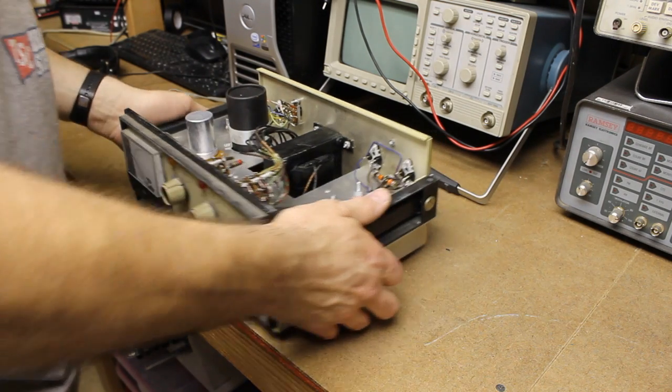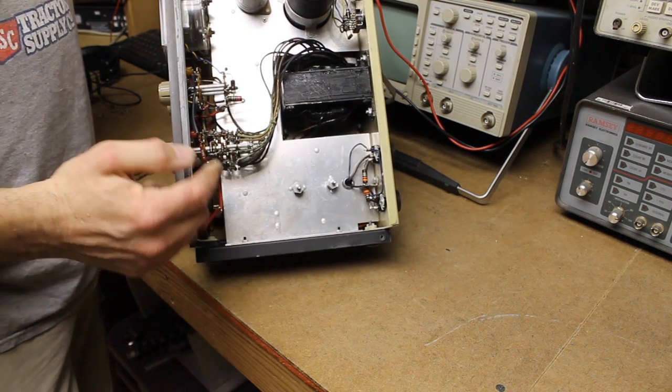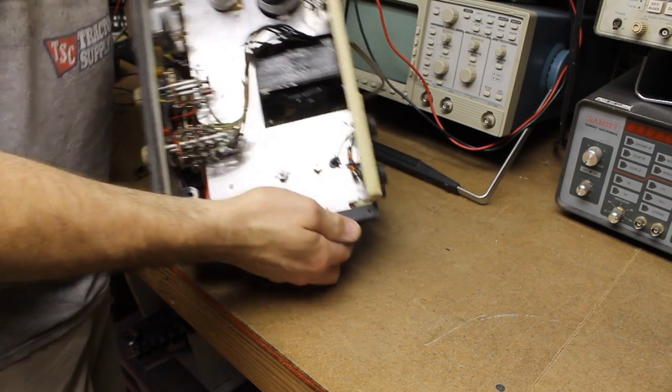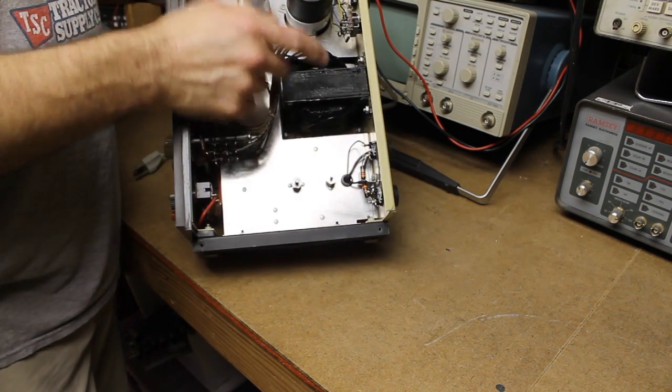Inside on the top, we have our wafer switches, meter movement, pass transistors, capacitor, and transformer.